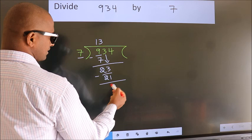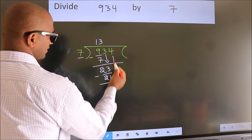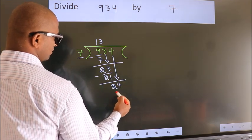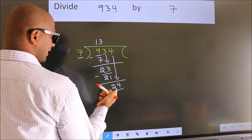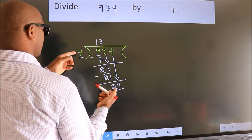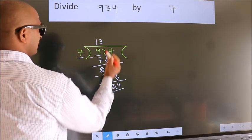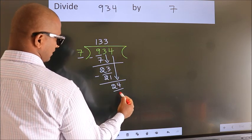After this, bring down the beside number. So 4 down, so 24. A number close to 24 in the 7 table is 7 threes 21.